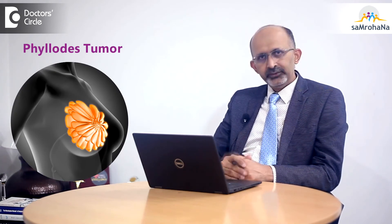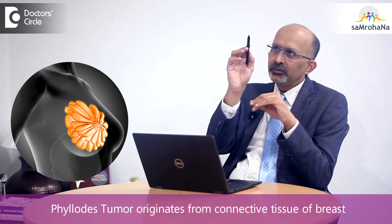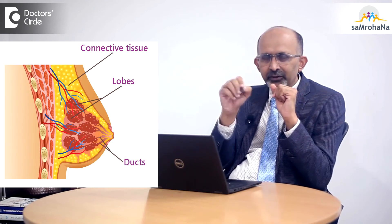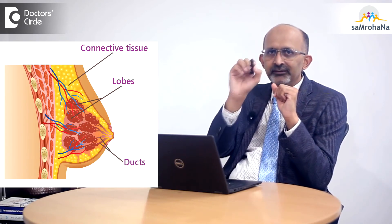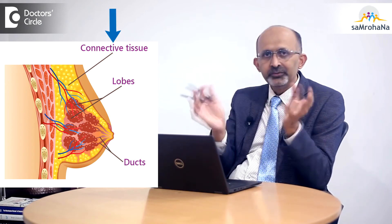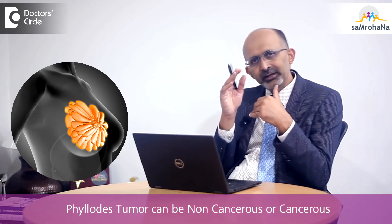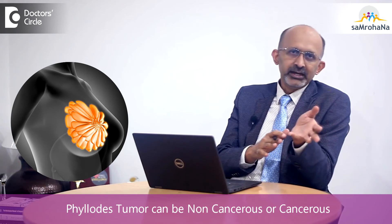Another rare entity is the phyllodes tumour, which originates from the connective tissue of the breast — not the ducts or the milk-forming glands, but the connective tissues all around the breast. These tumours can be benign as well as malignant. Benign means they don't spread anywhere, while malignant means they spread to some other organ.